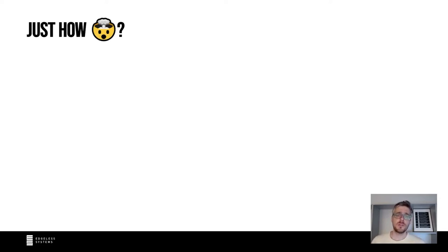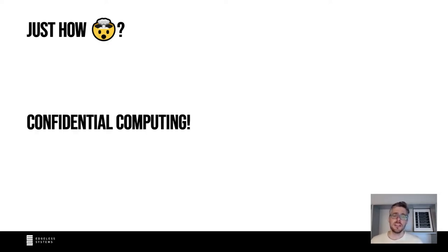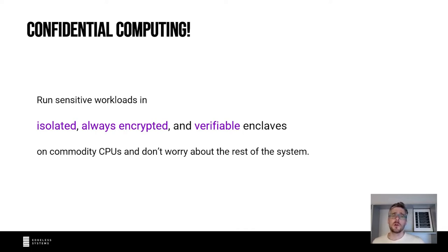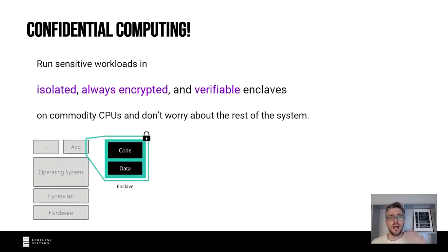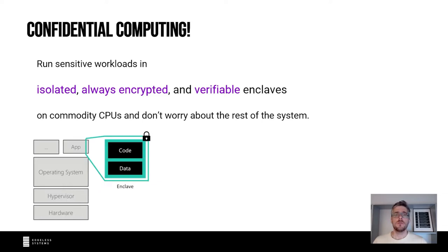This possibly sounds too good to be true, so how do we do this? Obviously there is no such thing as magic, so we rely on a new technology called confidential computing. In a nutshell, confidential computing is all about running sensitive workloads in so-called secure enclaves. These enclaves are available on many recent server CPUs, for example from Intel. They can run arbitrary software in strong isolation, and no other system component — like the operating system, the hypervisor, other apps, or even other hardware components — can look inside an enclave or interfere with it.